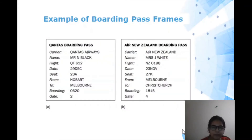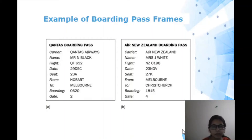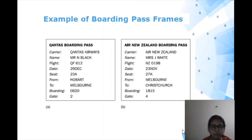Let's look at another example: a boarding pass frame. Boarding passes have a fixed format, and there can be many frames like this — for example, Air Canada boarding pass and Air New Zealand boarding pass. These contain many slots such as carrier name, flight, date, seat, from, and to, along with their content values.